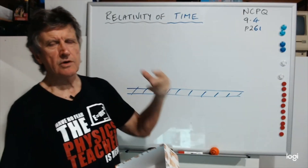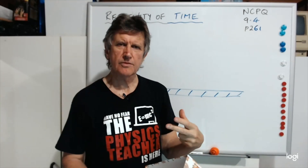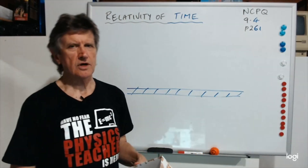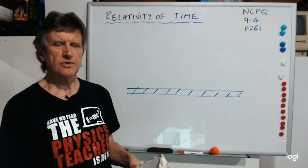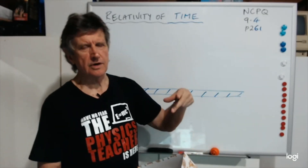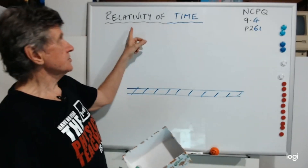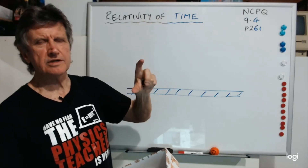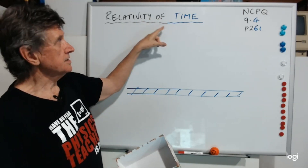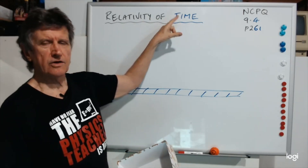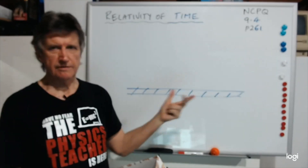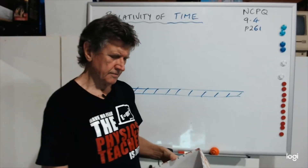The muons — if you were travelling with a muon, you would measure the average lifetime as being about 2.2 microseconds, so it's about a tenth. So the lifetime is relative, and the time interval that a muon would exist for is dependent on the motion of the muon, or the motion of the observer relative to the muon.